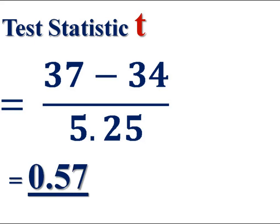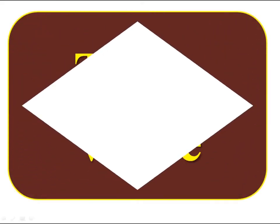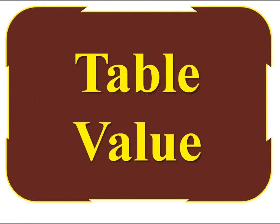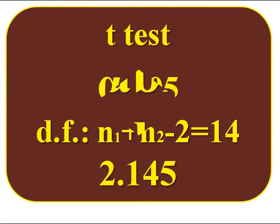T is the computed test statistic value: T computed equals 0.57. Then find the table value. It is a t-test with degree of freedom N1 plus N2 minus 2, which is 14, and level of significance 0.05. Therefore, table value T equals 2.145.